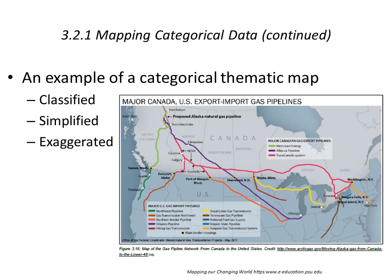Here's another example of a categorical thematic map where data have been classified, simplified, and aggregated. In this case, it's a map of major Canada and U.S. export-import gas pipelines. The map is quite simple — it doesn't need to include every major city or labels of all the states. The point of the map is to show the location of pipelines.